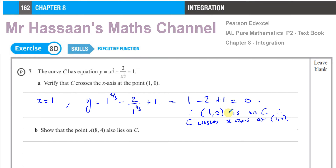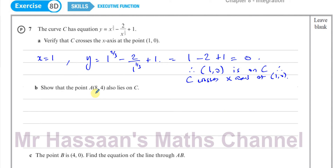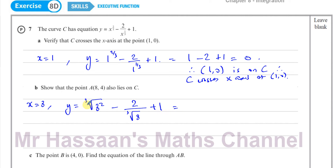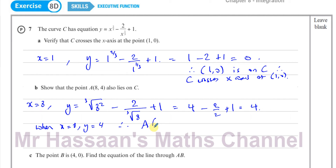Part b says show that the point A(8, 4) also lies on C. When x equals 8, writing the equation in surd form: y equals the cube root of 8 squared minus 2 over the cube root of 8 plus 1. The cube root of 8 squared is 2 squared which is 4; 2 over the cube root of 8 is 2 over 2 which is 1. So y equals 4 minus 1 plus 1, which is 4. When x equals 8, y equals 4, therefore the point A(8, 4) is on C.